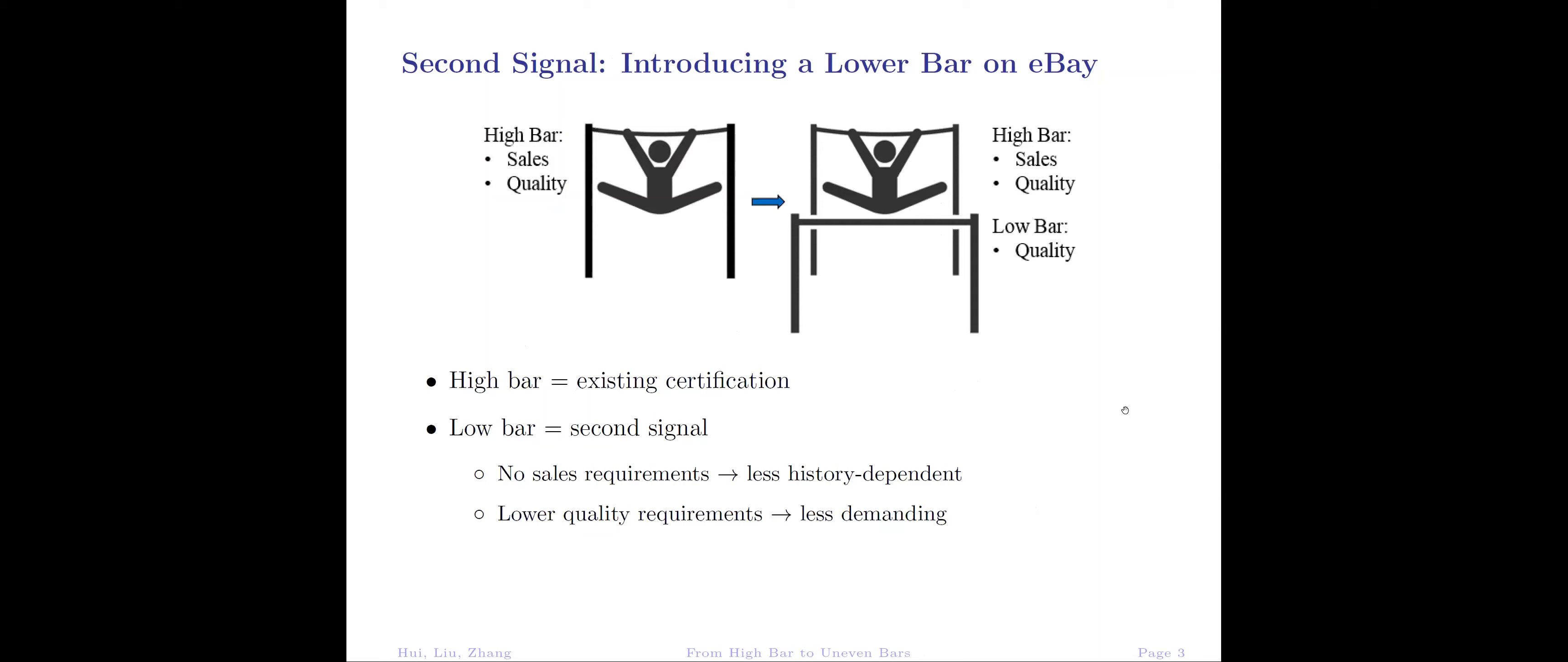After the policy change, the requirements for the high bar remain the same, and eBay introduces a low bar as the second signal. The low bar has no requirements on past sales, making it less history-dependent. Also, the low bar has lower requirements on quality, making it less demanding than the existing certification.